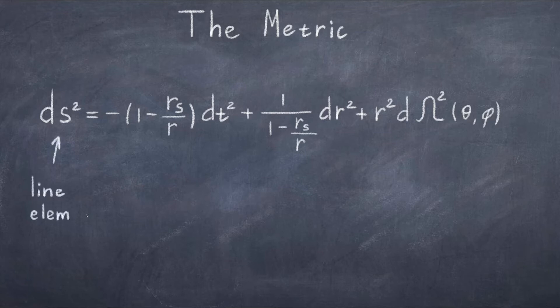Schwarzschild used spherical coordinates. So his spatial components are the radius r, the angle theta, and the angle phi. But due to the spherical symmetry, the angular terms are rather trivial, so we just hide them in the term d omega squared.